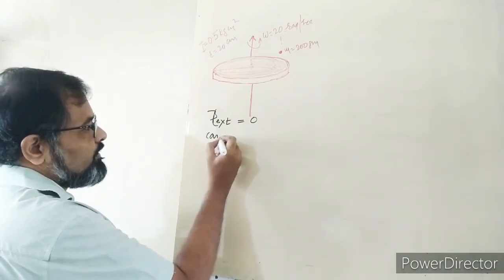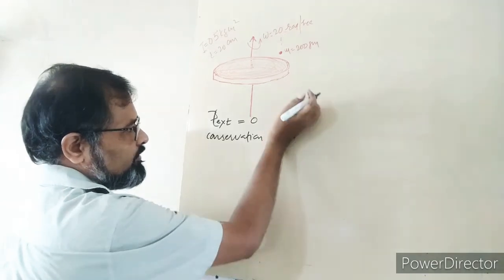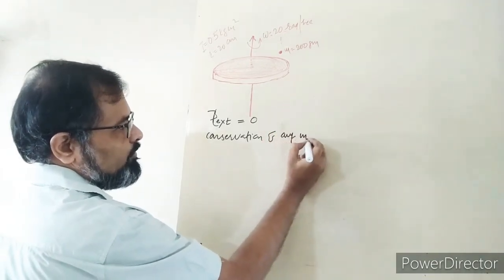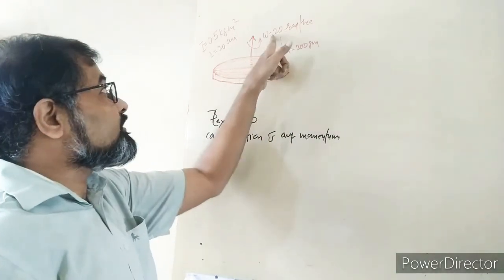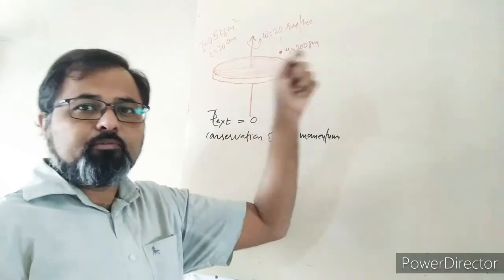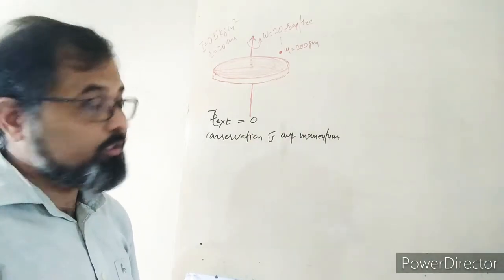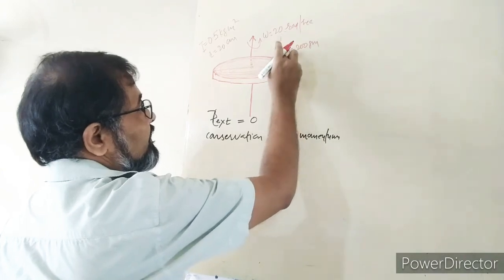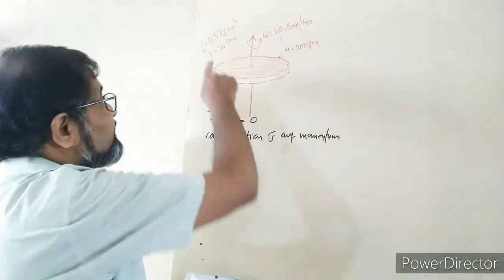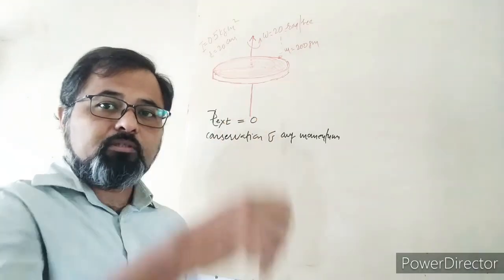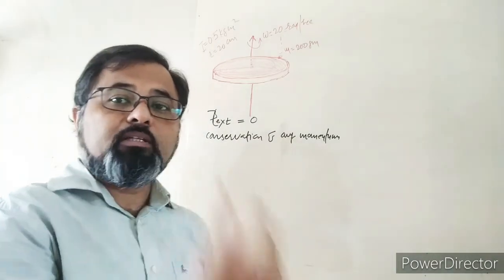How to do conservation of angular momentum? The particle has mass and when mass is added, the moment of inertia changes. The mass distribution about the axis of rotation changes, so the angular velocity will change.